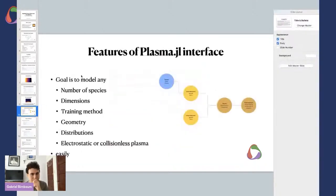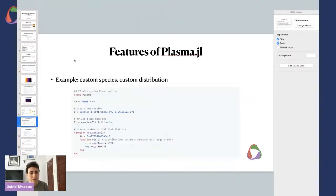Let's talk about the features of the PlasmaJL interface. I touched on this briefly, but basically the goal is to model any plasma easily, right? That means that we need to model any number of species, any number of dimensions, with any training method, with any distribution, and either electrostatic plasmas or collisionless plasmas, super easily. We built the interface so that you can create a plasma object that takes an array of distribution functions, and each distribution function has an initial distribution and a species. You can pass that to a solver, which returns a plasma solution, which is an object holding all elements that you need to analyze the solution that you got.